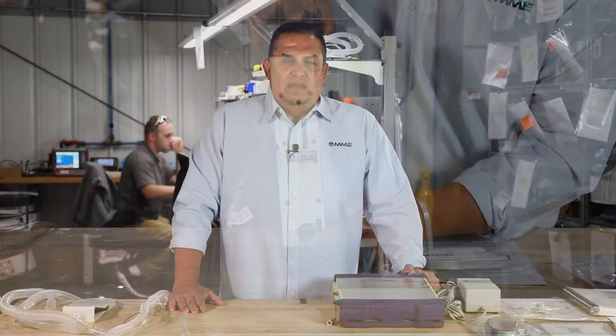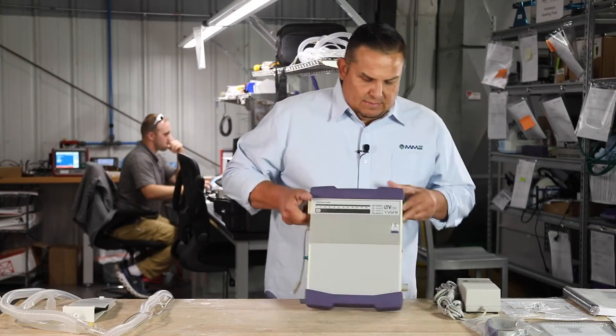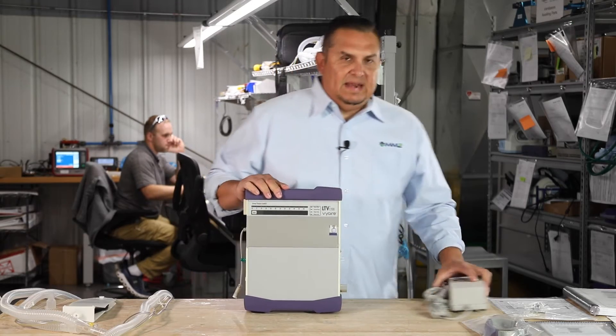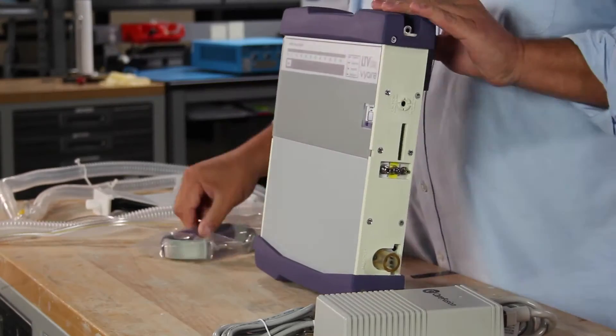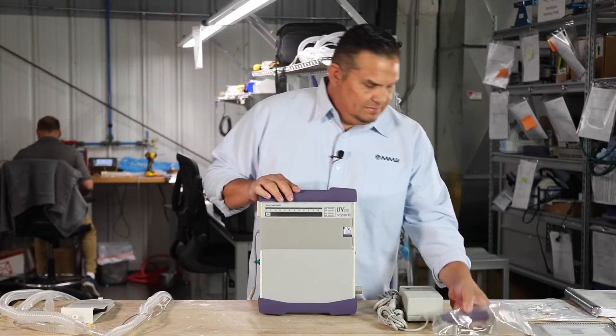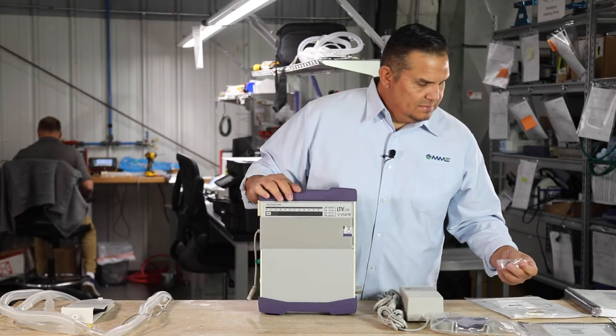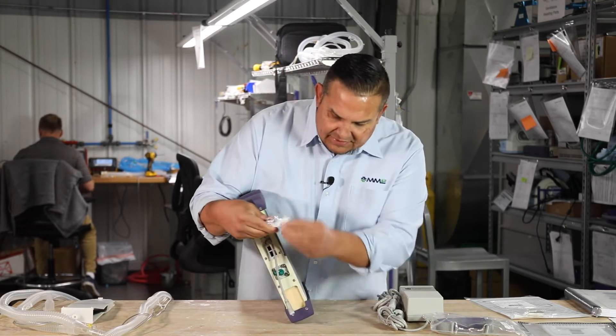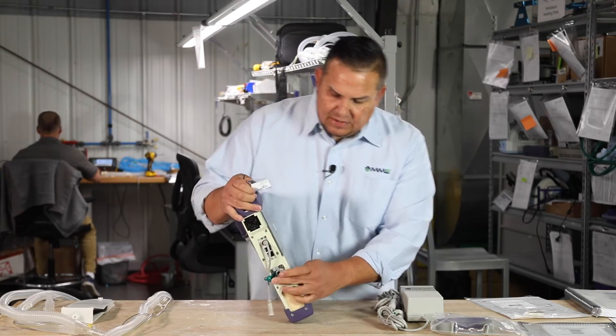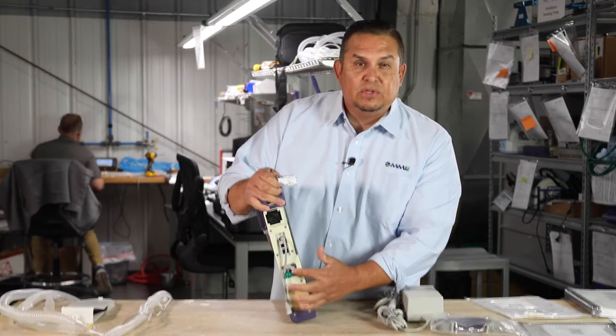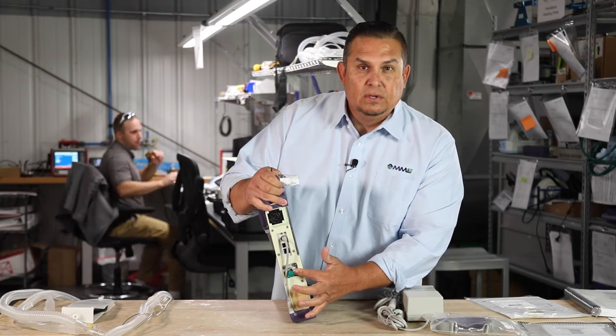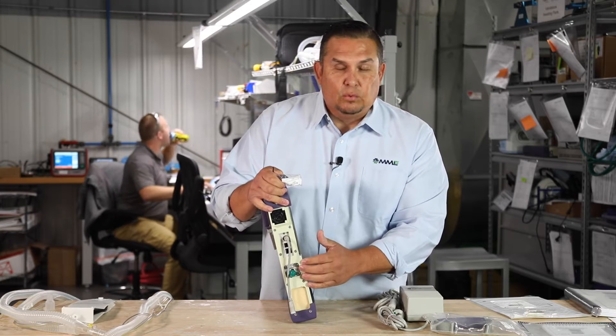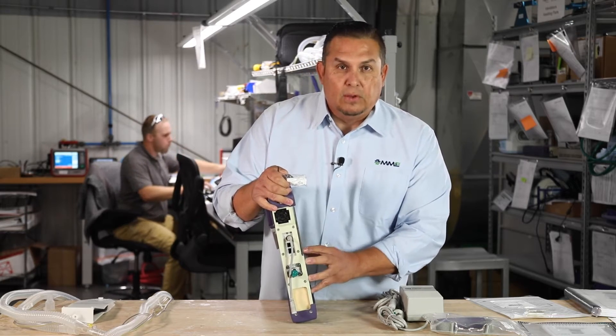Out of the box, the LTV 1200 comes with the ventilator itself, an AC adapter, a strap hand, and a Christmas tree that hooks up on the side which allows you to hook up to low flow oxygen. The LTV 1200 allows you to either run off high flow or low flow oxygen.